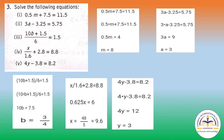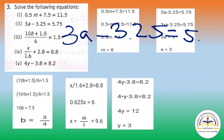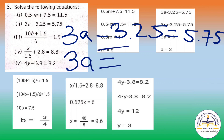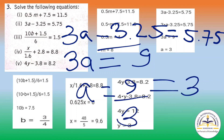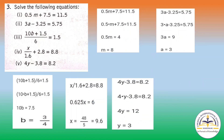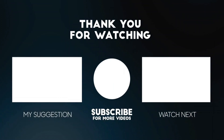Now we will solve question number 2: 3a minus 3.25 equals to 5.75. So 3a equals to — you have to transfer minus 3.25 to the RHS and add the values. You will get 9. So a equals to 9 by 3, which means a equals to 3 will be the answer. You have to solve the next three questions in the same manner.